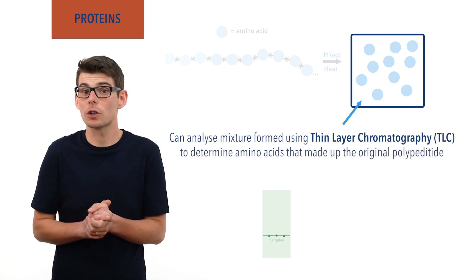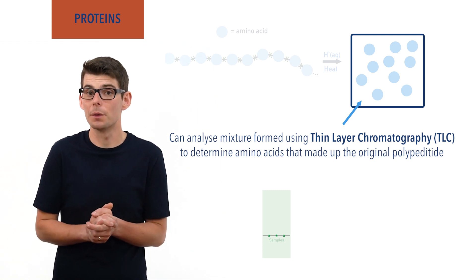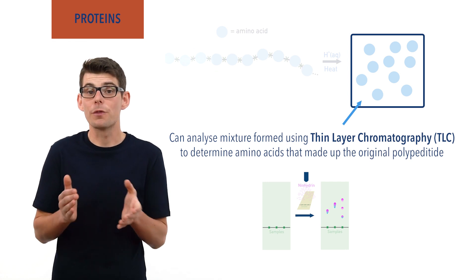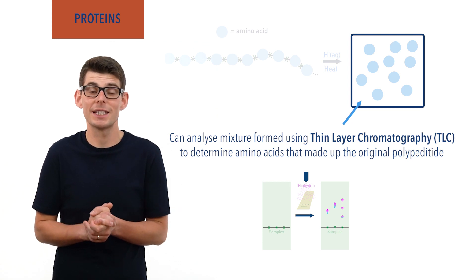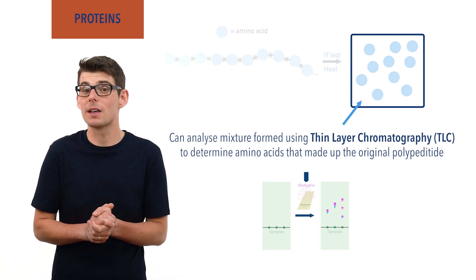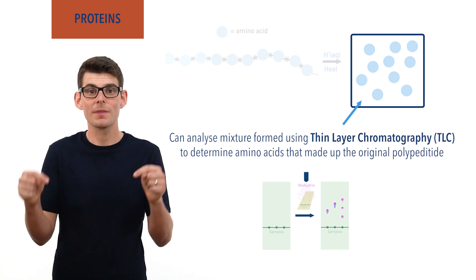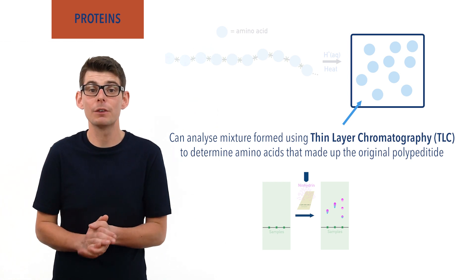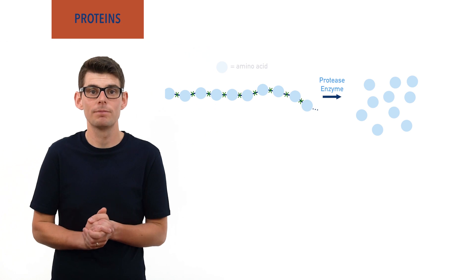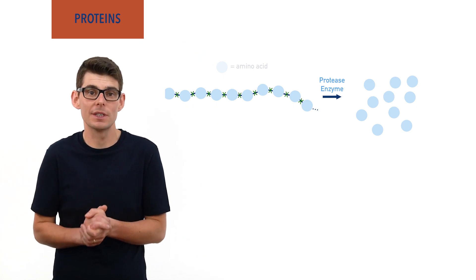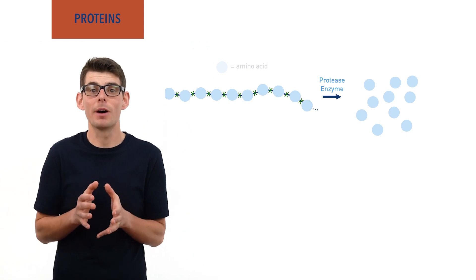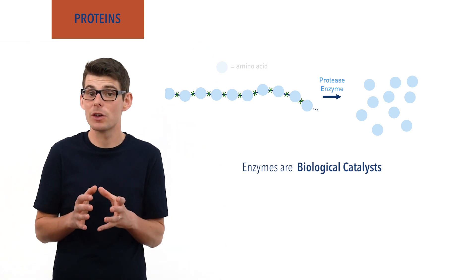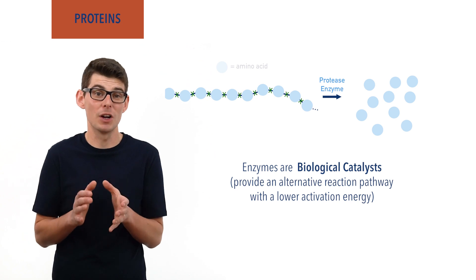As amino acids are organic compounds that are colorless, UV light or a locating agent must be used to see where the amino acids are on the chromatogram. From this, RF values can be used to confirm the presence of a particular amino acid. Chromatography has been covered in more detail at chemistrystudent.com — check the links in the description below. Polypeptides can also be broken down using protease enzymes. Enzymes are protein-based substances made by living organisms that can act as biological catalysts; they provide alternative reaction pathways, dramatically reducing the activation energy needed and making a reaction much faster.